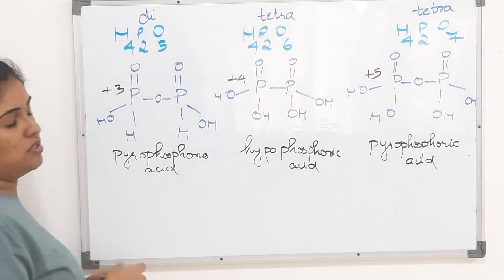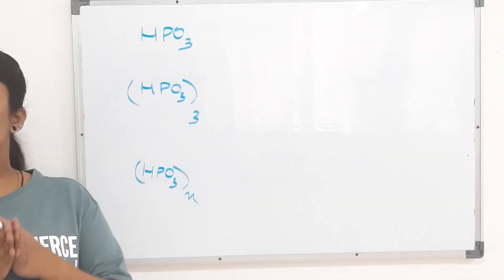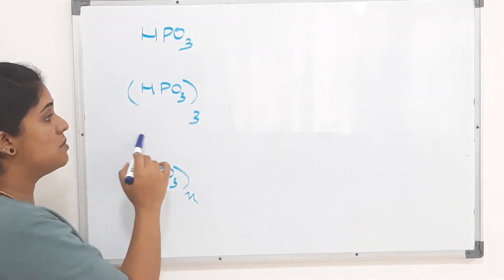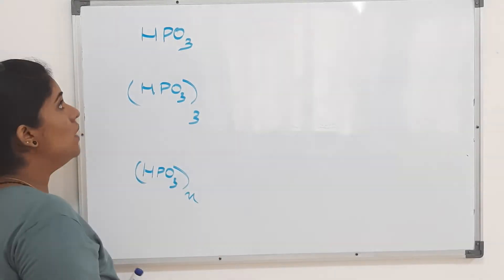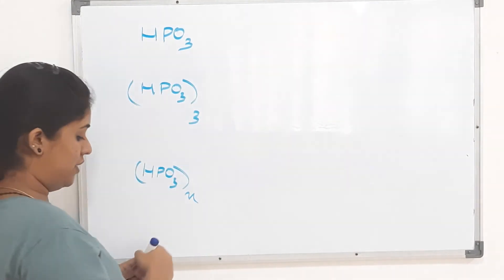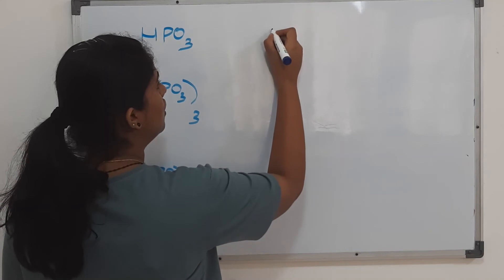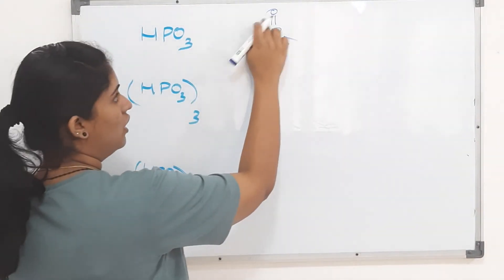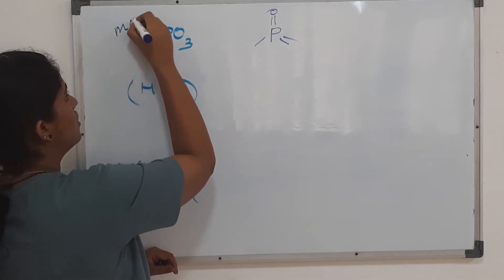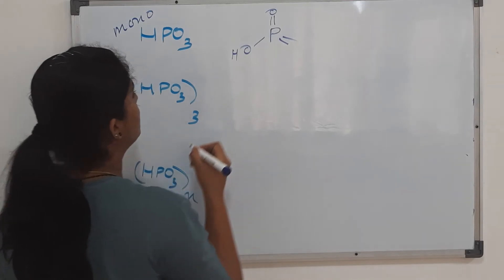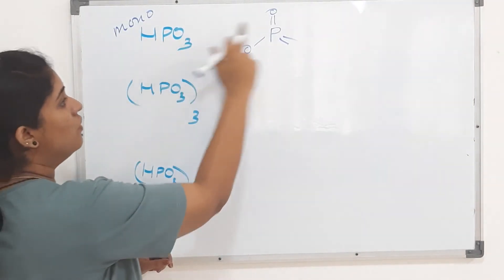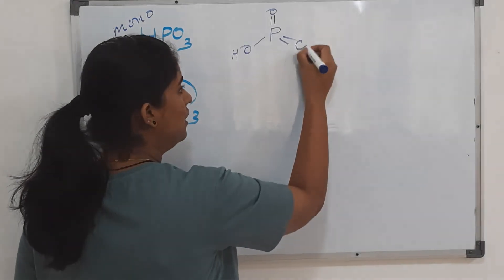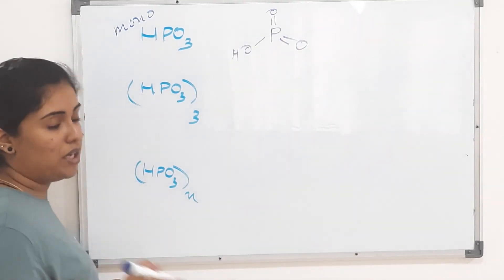Now we have the last class of oxoacids with similar structures, featuring HPO₃ groups: HPO₃ once, HPO₃ three times, and HPO₃ n times. For the single HPO₃ unit, we place a phosphorus with one P=O unit. This is a monobasic structure, so it has one OH group. After placing the OH, one hydrogen is satisfied, one phosphorus is done, and three oxygens are needed — two are accounted for, so the third is also a P=O double bond, giving two P=O units in this structure.